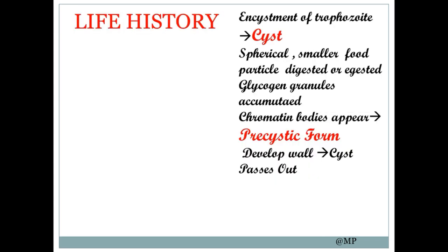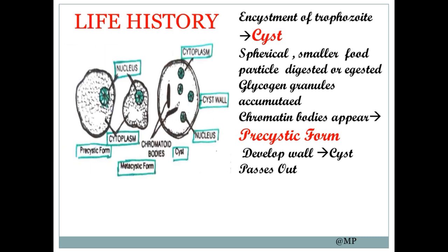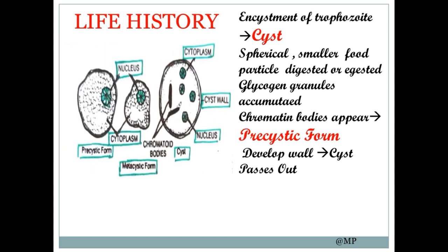In the life history, after the encystment of the trophozoite, it forms the cyst. It becomes spherical and smaller, food particles are digested or exhausted, glycogen granules accumulate, and chromatin bodies appear. There is an intermediate stage between the cyst and trophozoite, which is called the precystic form.